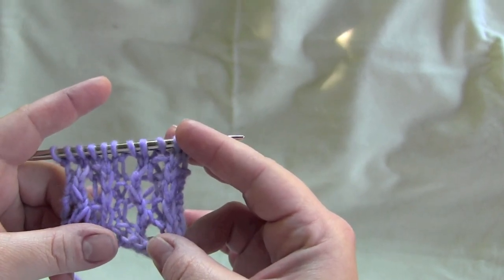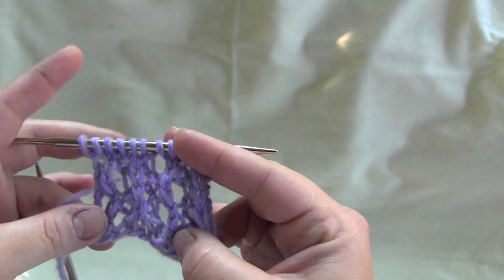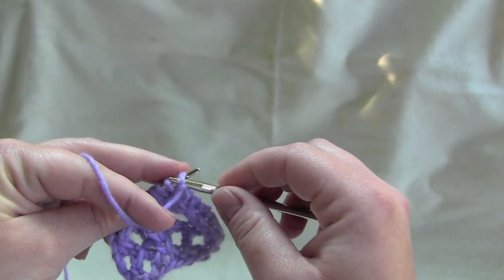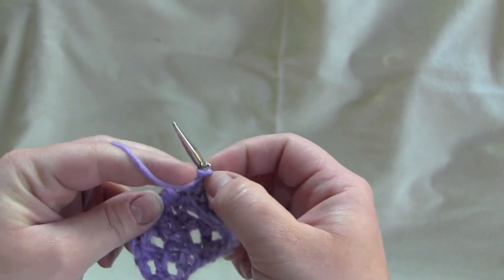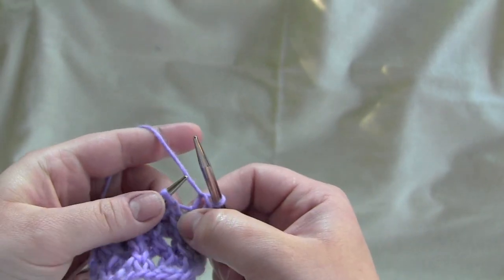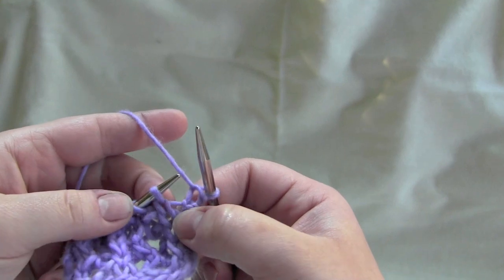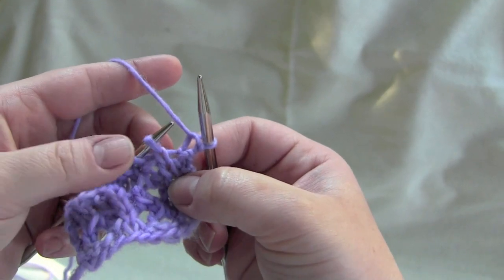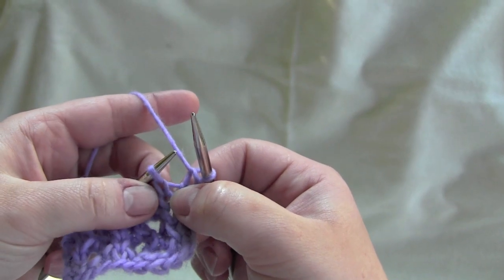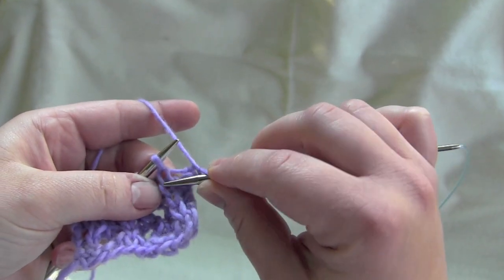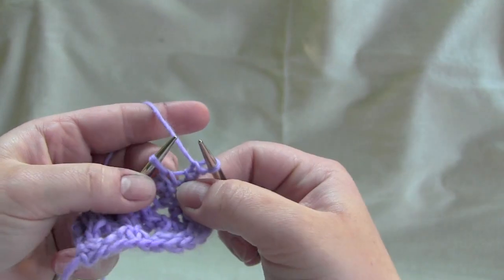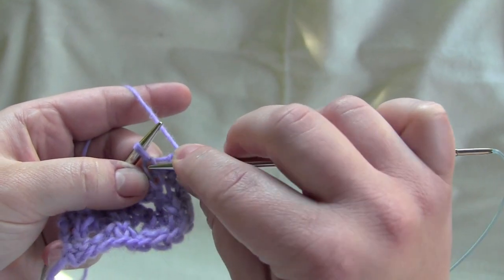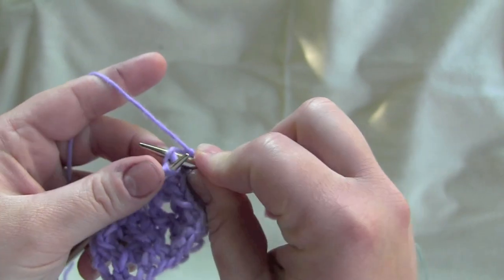The yarn that I'm using is Malabrigo worsted and I'm using size eight needles. For row one, you purl the first stitch and then you're going to knit into the stitch below. So look at the next stitch on your left needle and you want to look right here, right below the next stitch on your left needle. Right in there is where you want to put your needle. And you knit,